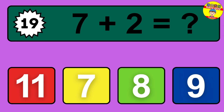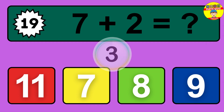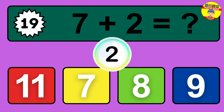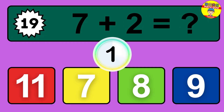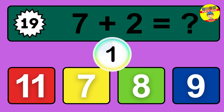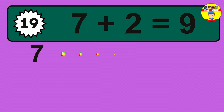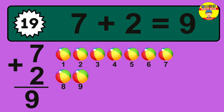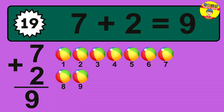Question 19. 7 plus 2 equals what? So the answer is 7 plus 2 is 9.